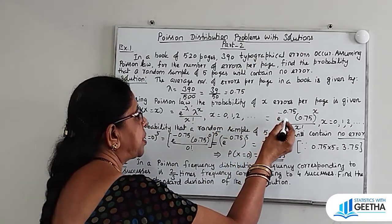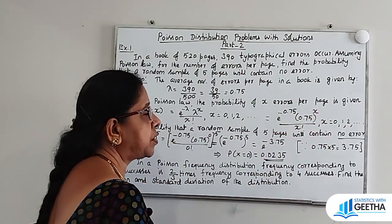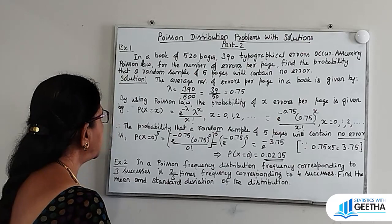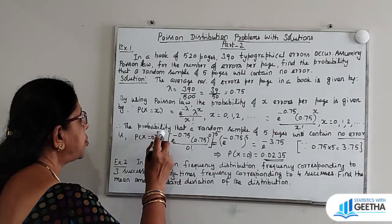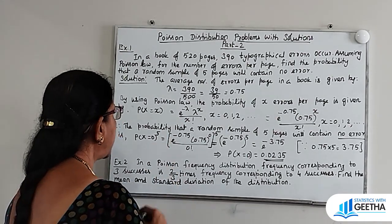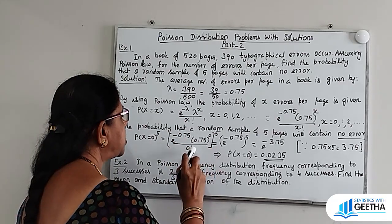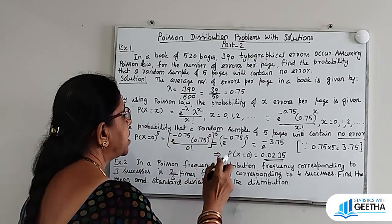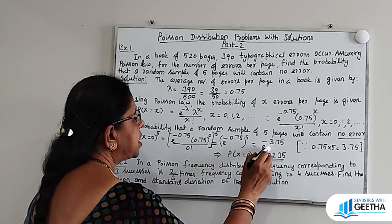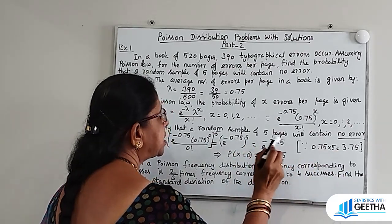Substituting lambda = 0.75, we get P(X=x) = e^(−0.75) · (0.75)^x / x!, where x = 0, 1, etc. Therefore, the probability that a random sample of 5 pages will contain no error is [P(X=0)]^5, which equals e^(−0.75×5) = e^(−3.75).